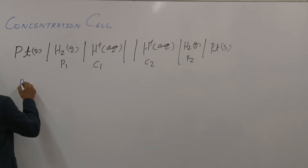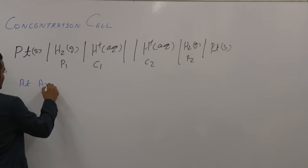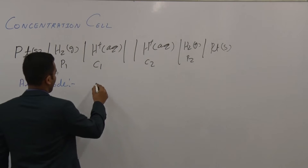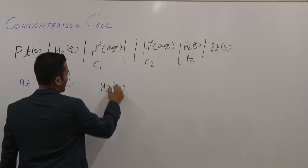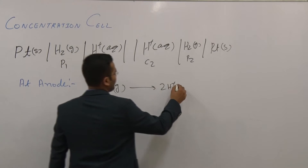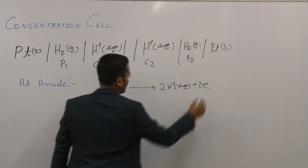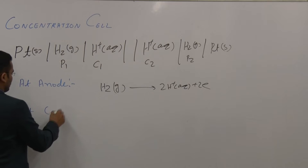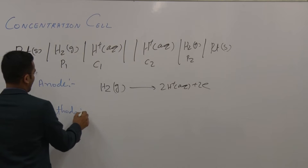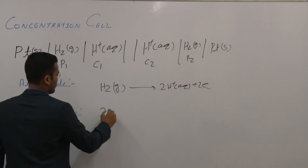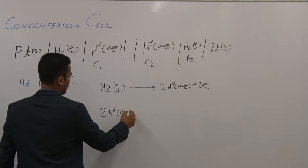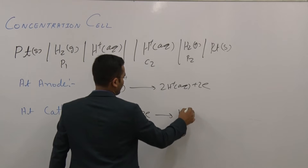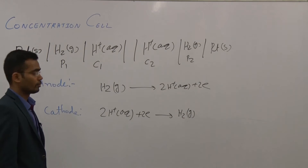Now for the next example with a hydrogen electrode. At the anode, oxidation occurs: H₂ gas is oxidized to form 2H⁺ aqueous plus 2 electrons. At the cathode, 2H⁺ aqueous takes 2 electrons to form H₂ gas.